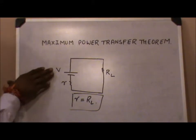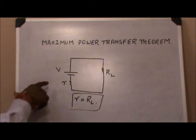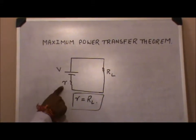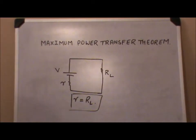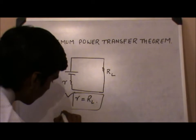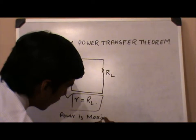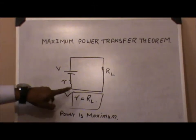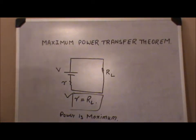Now we can have a look at the diagram of this Maximum Power Transfer Theorem. We have a battery with EMF V and internal resistance denoted by small r, and we have a load resistance RL. The maximum power transfer condition applies only when internal resistance r equals load resistance RL.